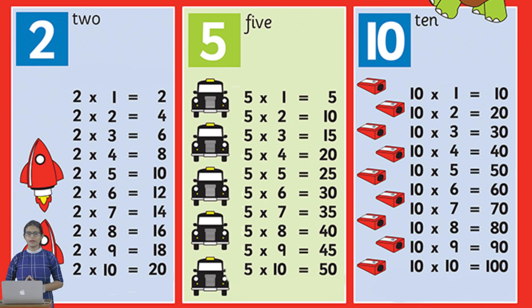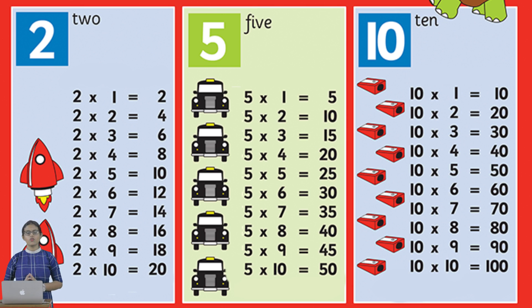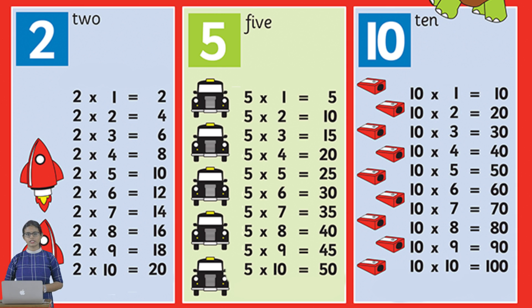The next table is the table of 5. 5×1=5, 5×2=10, 5×3=15, 5×4=20, 5×5=25, 5×6=30, 5×7=35, 5×8=40, 5×9=45, 5×10=50.